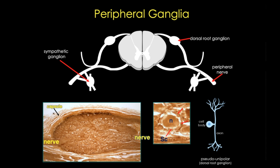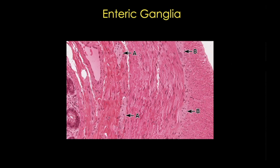Enteric ganglia, or plexi, are small groups of neurons in the digestive tract, going all the way from the esophagus to the rectum. Examples are shown here with A and B in this intestinal H&E stained image. Note that they look kind of wavy and pale, and they're going to look a lot like peripheral nerve. This entire enteric nervous system is often classified as part of the parasympathetic branch of the autonomic nervous system, but more recent work is consistent with this being an entirely separate system.